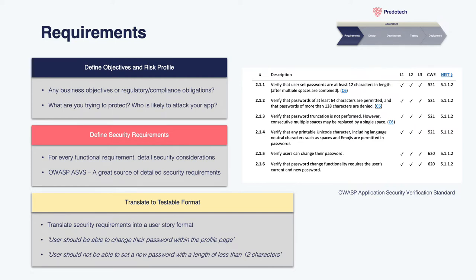You then want to define your risk profile. What is it you're trying to protect? Is it something sensitive? If it were compromised, what impact would it have? Who is likely to attack your app? Are nation states going to be interested in your data? Maybe not. But are attackers motivated by money interested? Potentially. All these questions go into your risk profile and will help you build a picture of the security level that's proportional to your application.